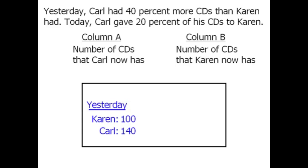Now the question tells us that Carl gives 20% of his 140 CDs to Karen. 20% of 140 is 28, so Carl gives Karen 28 of his CDs.